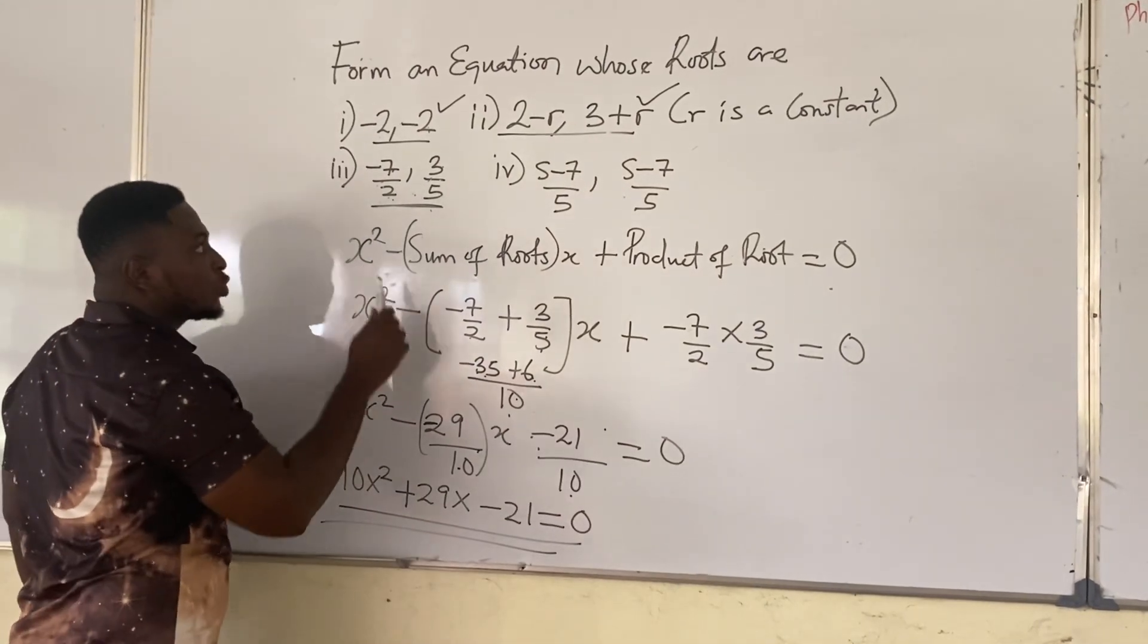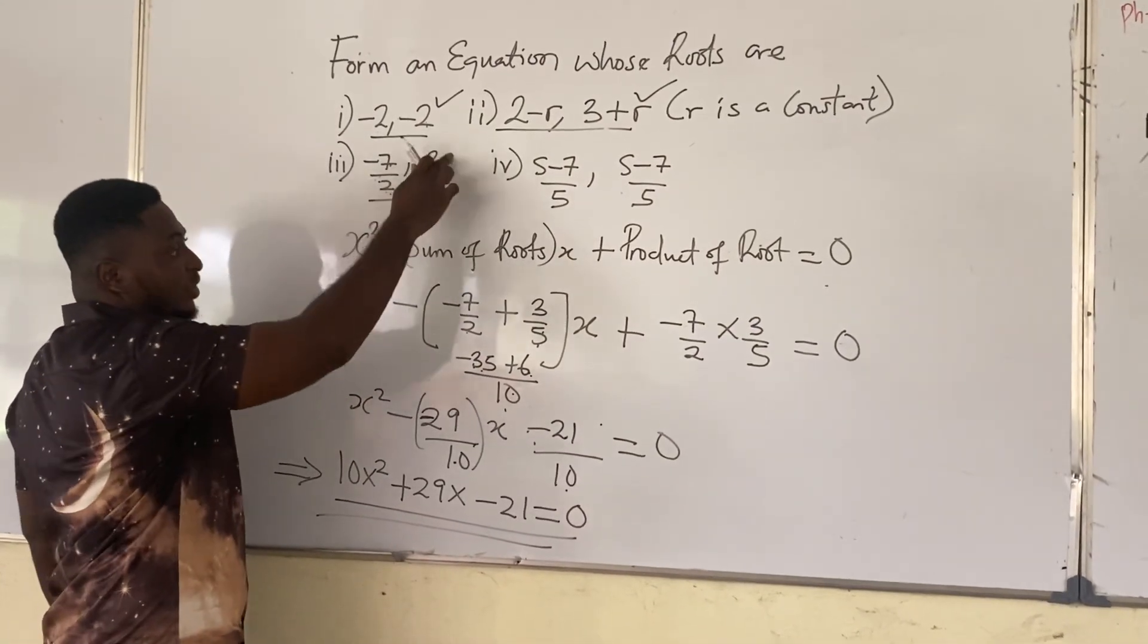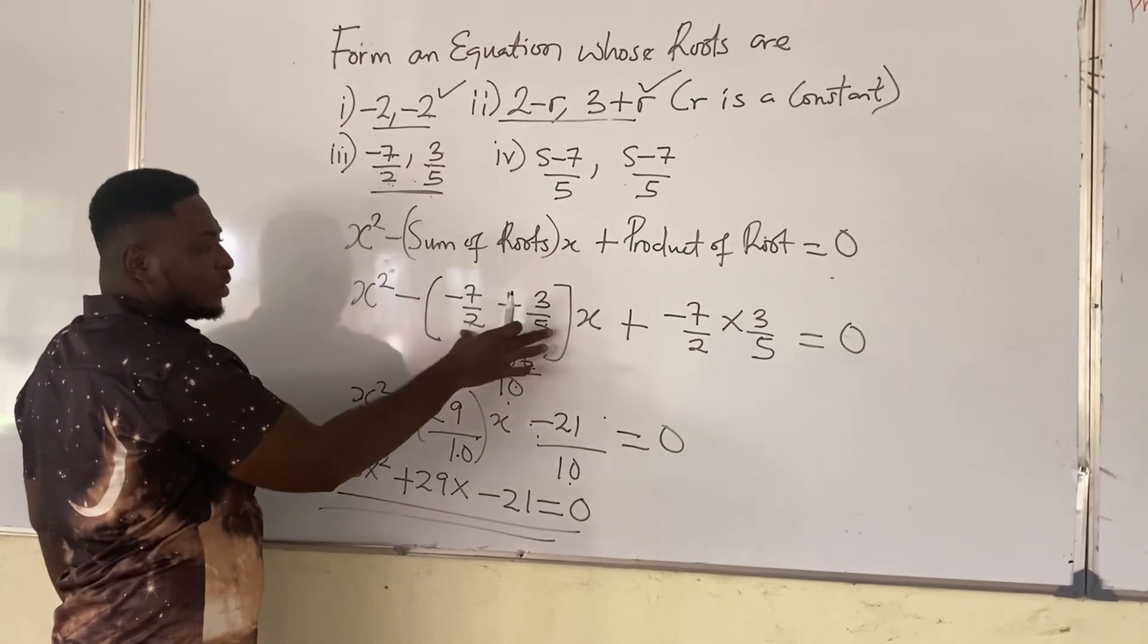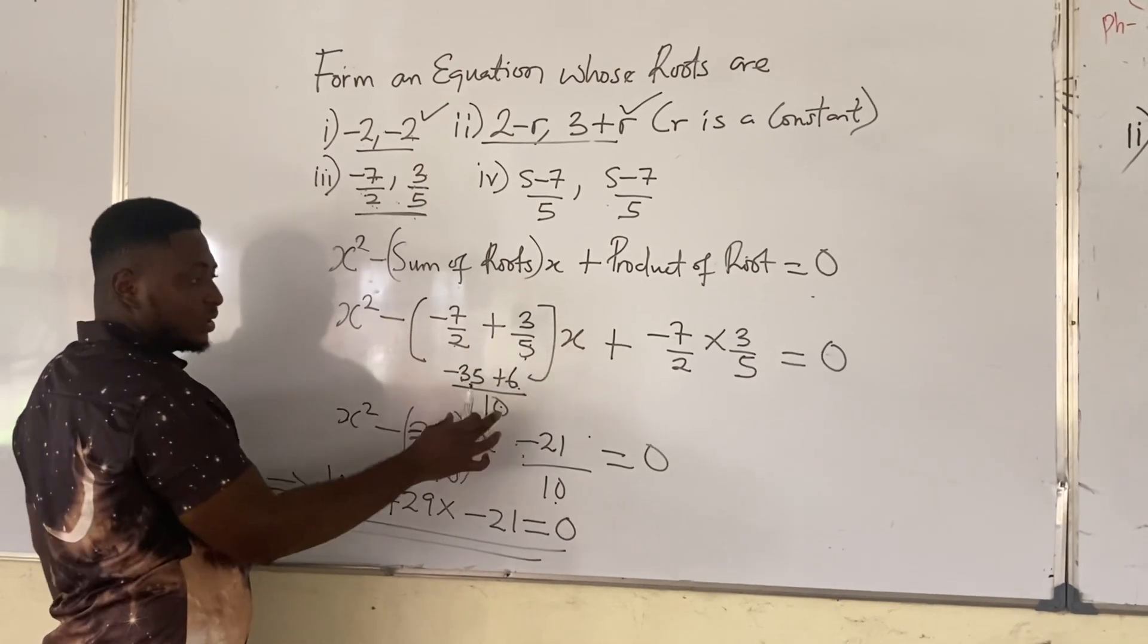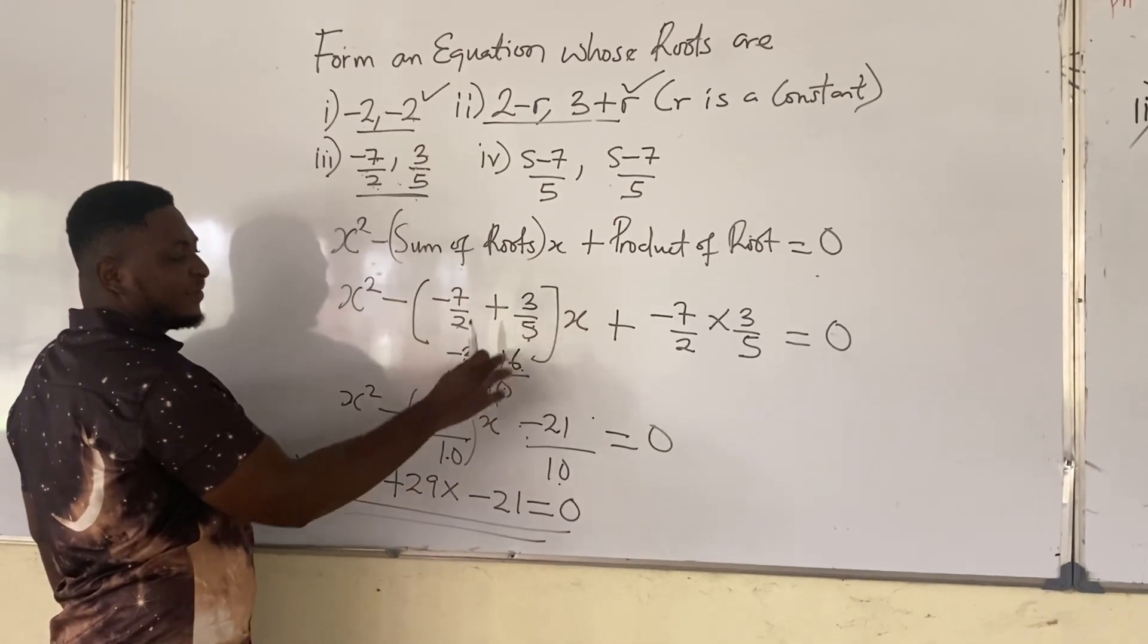So X squared minus, go add the 2 roots again, minus 7 over 2 and 3 over 5. Sum of roots means add up these 2, so we have minus 7 over 2 plus 3 over 5. You see we're adding up the 2 roots. We'll find the LCM of 2 and 5 is 10.